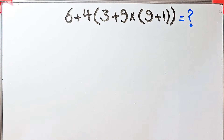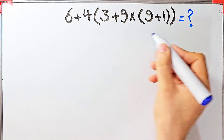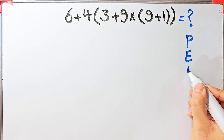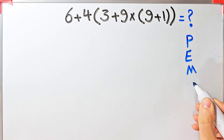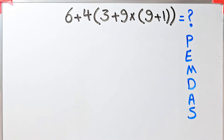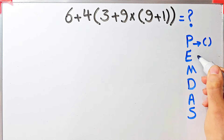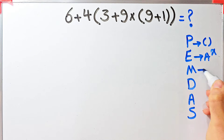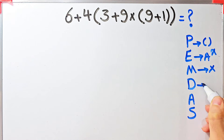To solve this question we need to follow the order of operations, which is PEMDAS. PEMDAS shows the priority of the mathematical operations, and if you don't pay attention to this rule you get the wrong answer. In this rule, P stands for parentheses, E stands for exponent, M stands for multiplication, D stands for division.